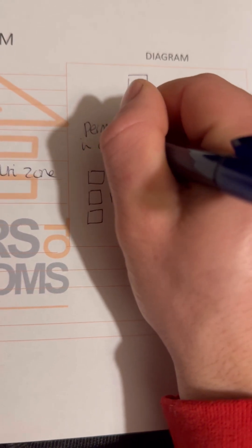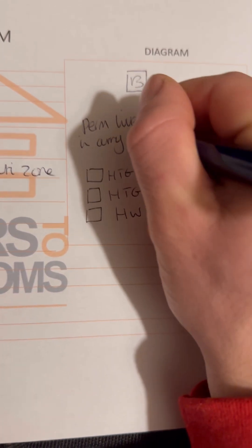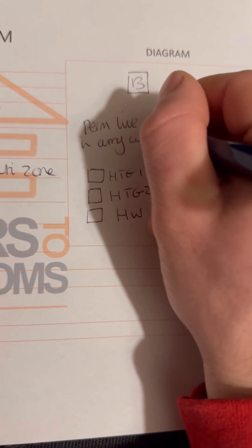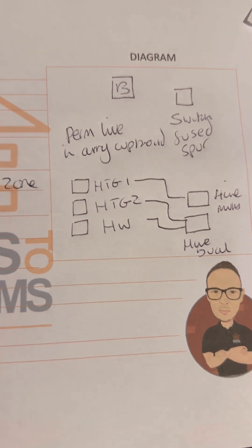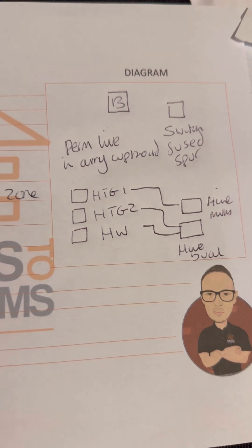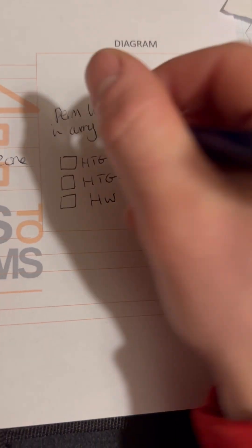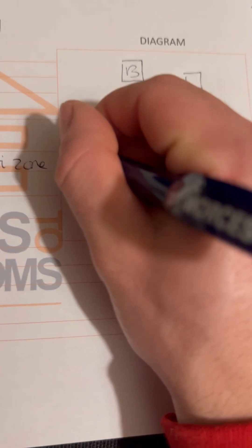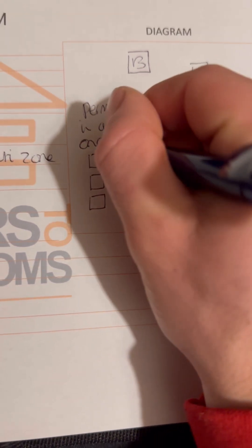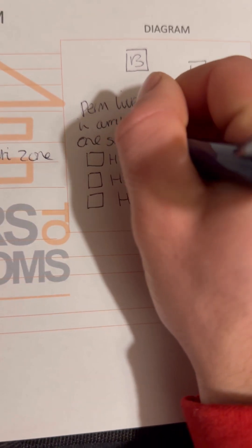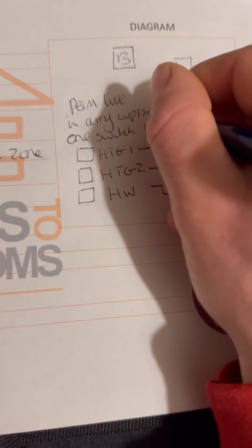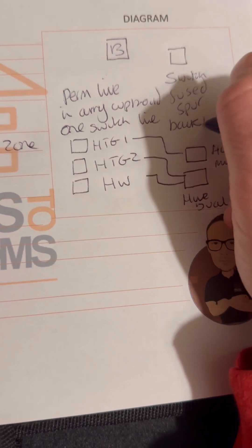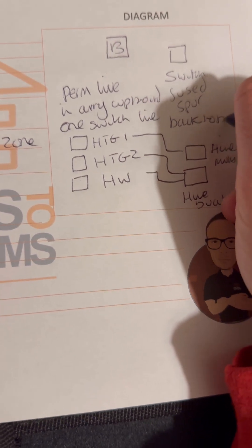Just making a note about having a permanent live in the airing cupboard. These notes are handy to keep anyway, because if the customer doesn't go with the job straight away and comes back to you a few months later, you can literally whip out this form and you've got all the information again - you don't have to go and re-quote it. We know there's only one call that goes down as a switch live to fire the boiler.